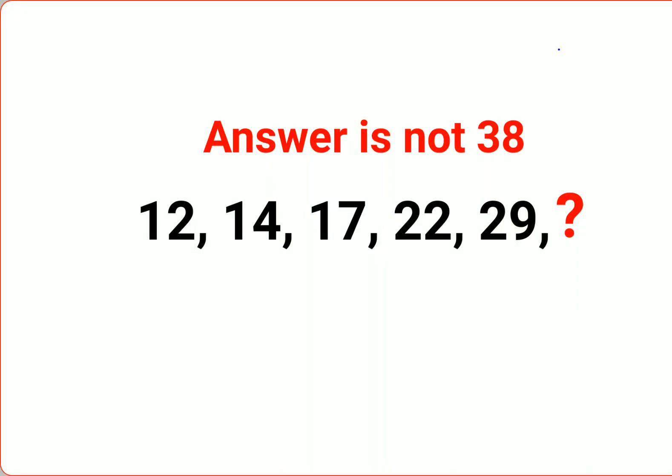Welcome everyone. Today we're going to solve a very nice series problem. A lot of people thought that the answer for this one is supposed to be 38. Why? Because if you see the difference here is 3, then the difference here is 5, then the difference here is 7. So obviously it's an odd series.